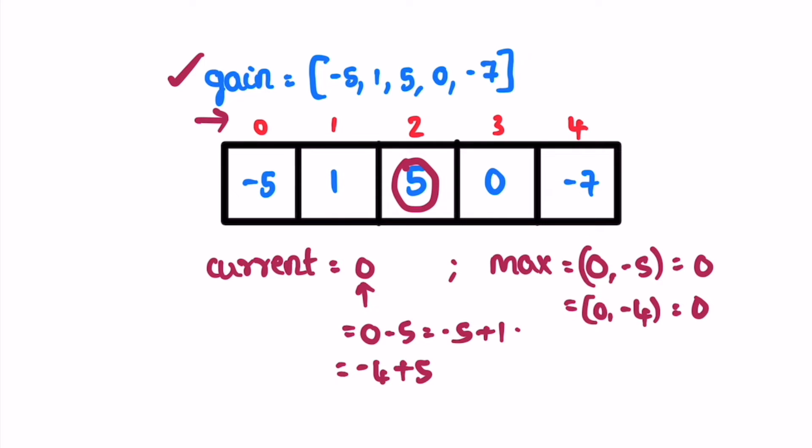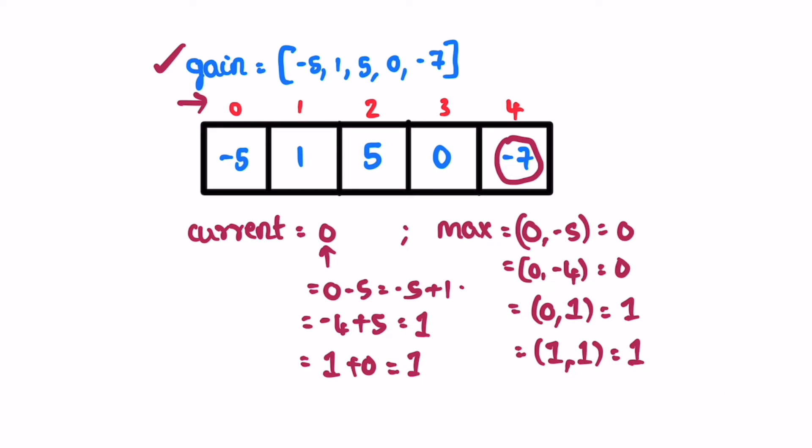We add it to the current value and get one. We check current max with current and update max with one. We go for the next element, which is zero. We add zero to the current value and get one.